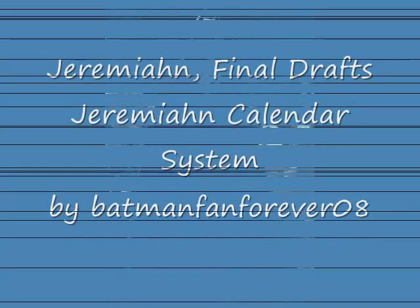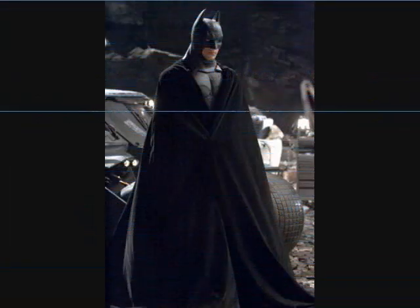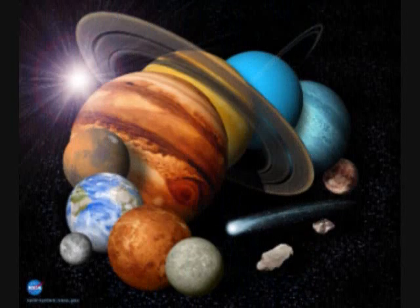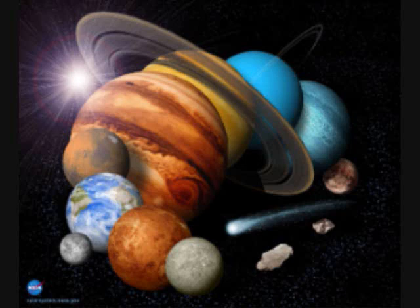This is Batman Fan Forever 08. Jeremiah Calendar System for Other Planets. I got month names from Gregorian and Zodiac calendars, day names from Gregorian, segment names from constellations, and terms for future colonists.